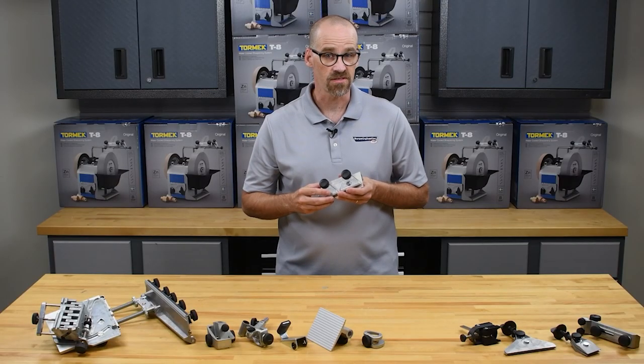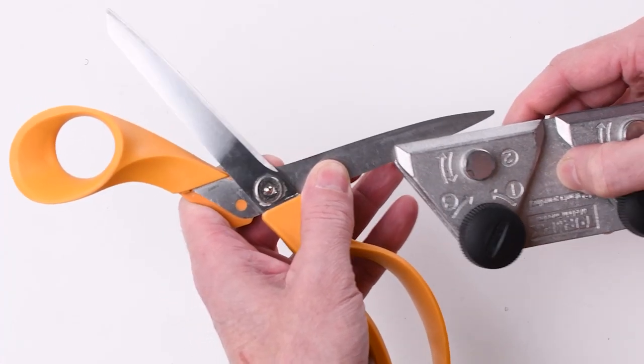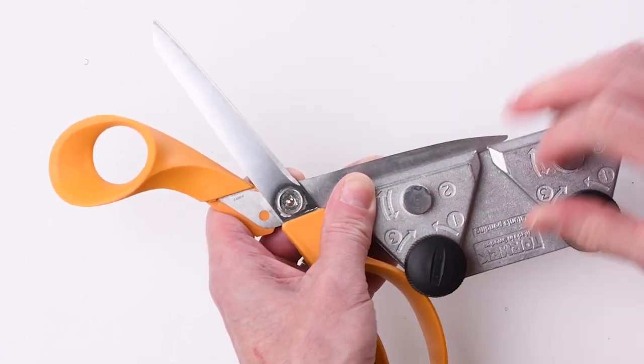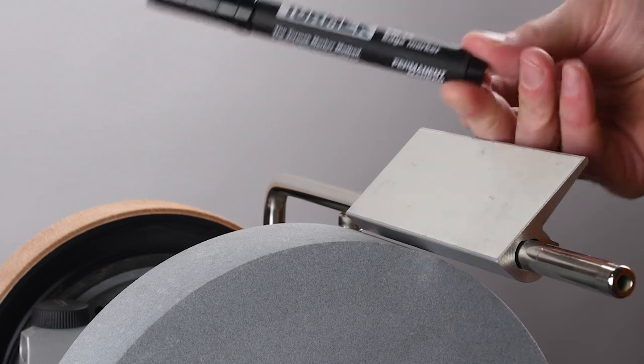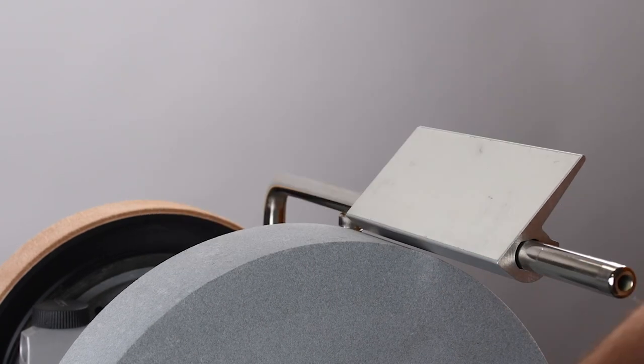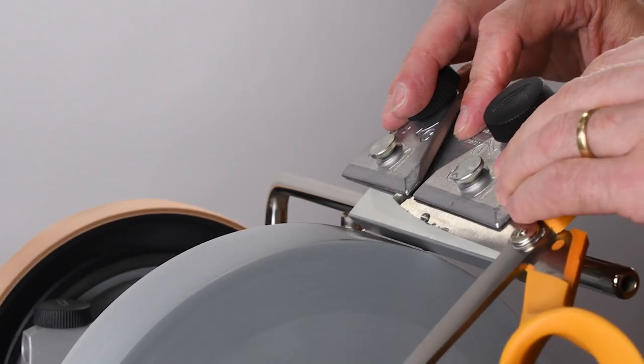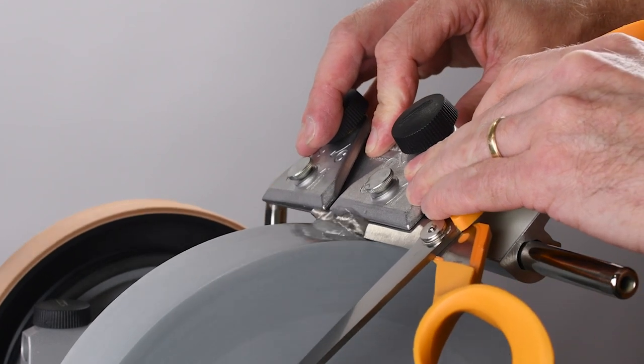The SVX150 scissors jig will handle household sewing and crafting scissors. Insert the scissors into the jig and tighten securely in place with the knobs. Mount the tool rest on the universal support. Using a marker or the WM200 Angle Master, set the desired angle. Place the scissors on the tool rest and move across the sharpening stone.